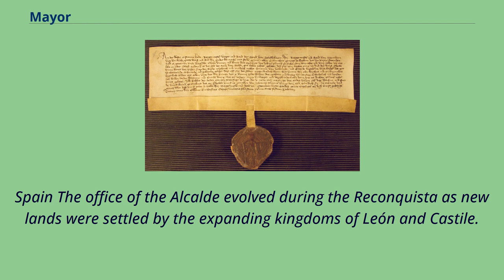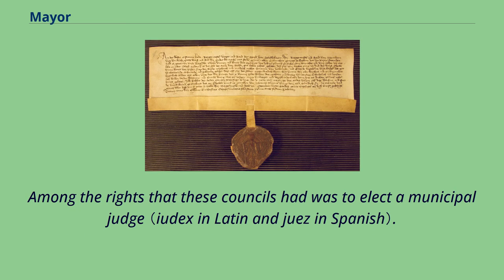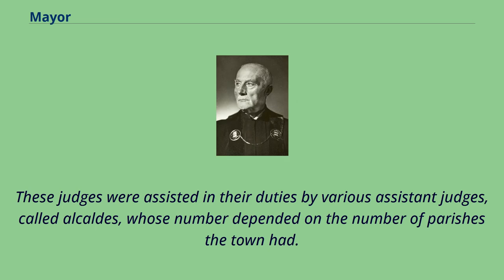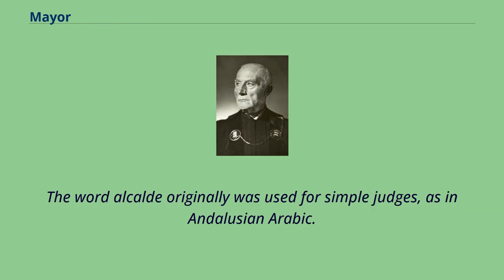The office of the Alcalde evolved during the Reconquista as new lands were settled by the expanding kingdoms of León and Castile. As fortified settlements in the area between the Douro and Tagus rivers became true urban centers, they gained from their feudal lords or the kings of León and Castile the right to have councils. Among the rights these councils had was to elect a municipal judge. These judges were assisted by various assistant judges called Alcaldes, whose number depended on the number of parishes the town had. The title Alcalde was borrowed from the Arabic al-qadi, meaning the judge.